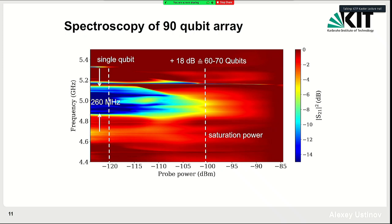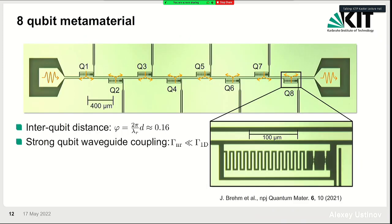Since we cannot make qubits identical or control their frequencies individually, we couldn't do much fine tuning. This brought us to the decision to make the whole array tunable — we need to change the frequencies of all the artificial atoms. Doing this in experiment requires individual flux controls, and to keep things manageable, we decided to take just eight qubits.